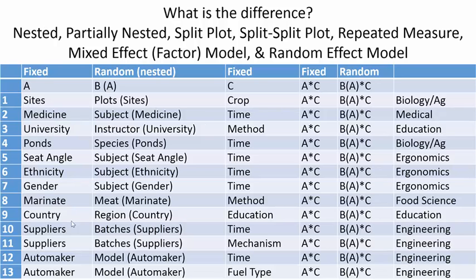Let me explain each of these and why they fall under their respective factor definitions: A is fixed, B is random and nested, and C is fixed. In the next video I'll show you how to analyze this experiment correctly using Minitab.